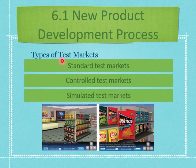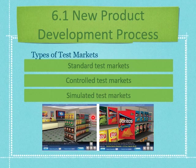Market testing can be done three ways: standard test market, controlled test market, and simulated test market. I want you to Google this and read more about these three types of test by yourself — consider this your homework. Go find out what standard test markets, controlled test markets, and simulated test markets are.